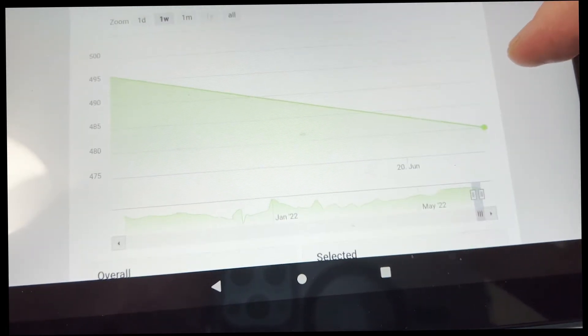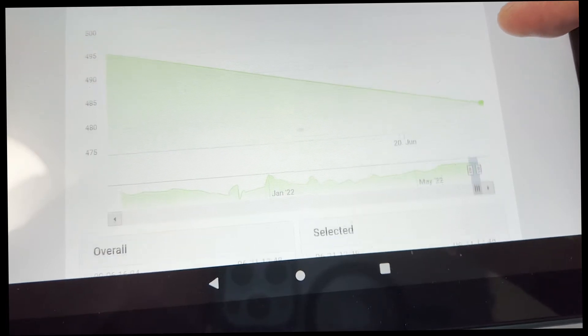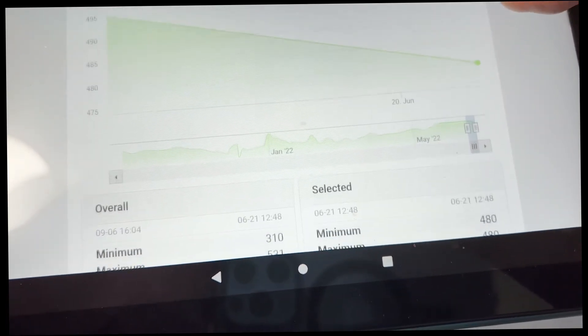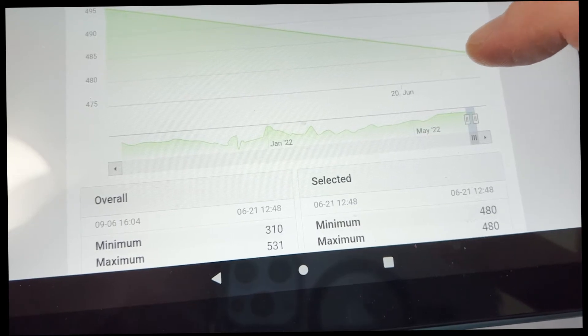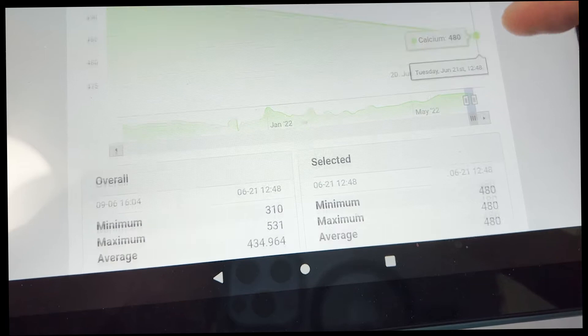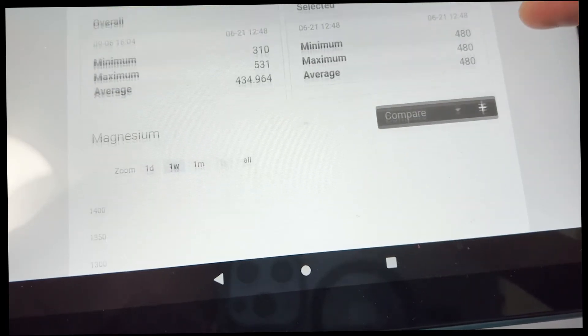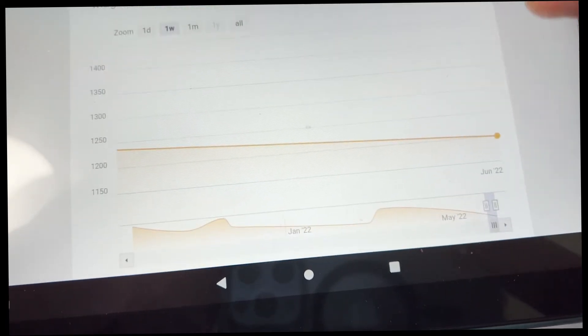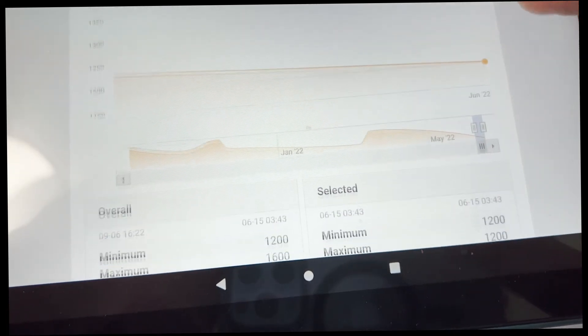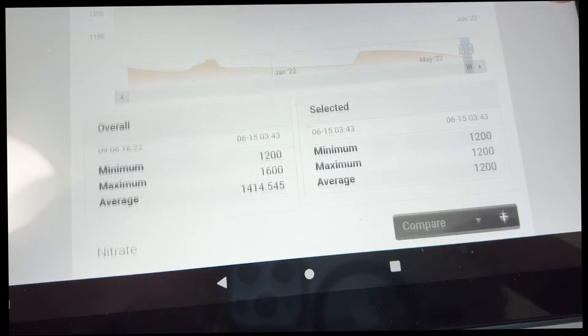Our calcium is coming back to real numbers at 480, tested with Red Sea. Next is magnesium - I did the Hannah checker but it said 1175 and I don't think that's right, so I'll check it again tomorrow.